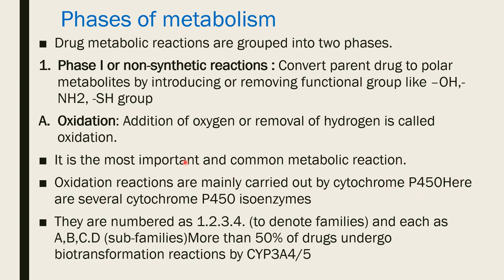Several cytochrome P450 isoenzymes are present, numbered as 1, 2, 3, and 4, each with ABCD subfamilies. More than 50% of drugs undergo biotransformation under CYP3A4 or CYP3A5 enzymes.